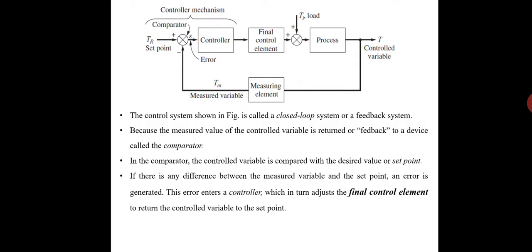The controller processes this information and decides what must be done to get the process variables back to where they should be after a load disturbance occurs. When all the measuring, comparing, and calculating are done, some type of final control element must implement the strategy selected by the controller. The final control element is the physical means by which we control the process parameters — it is the most important element in process industries.